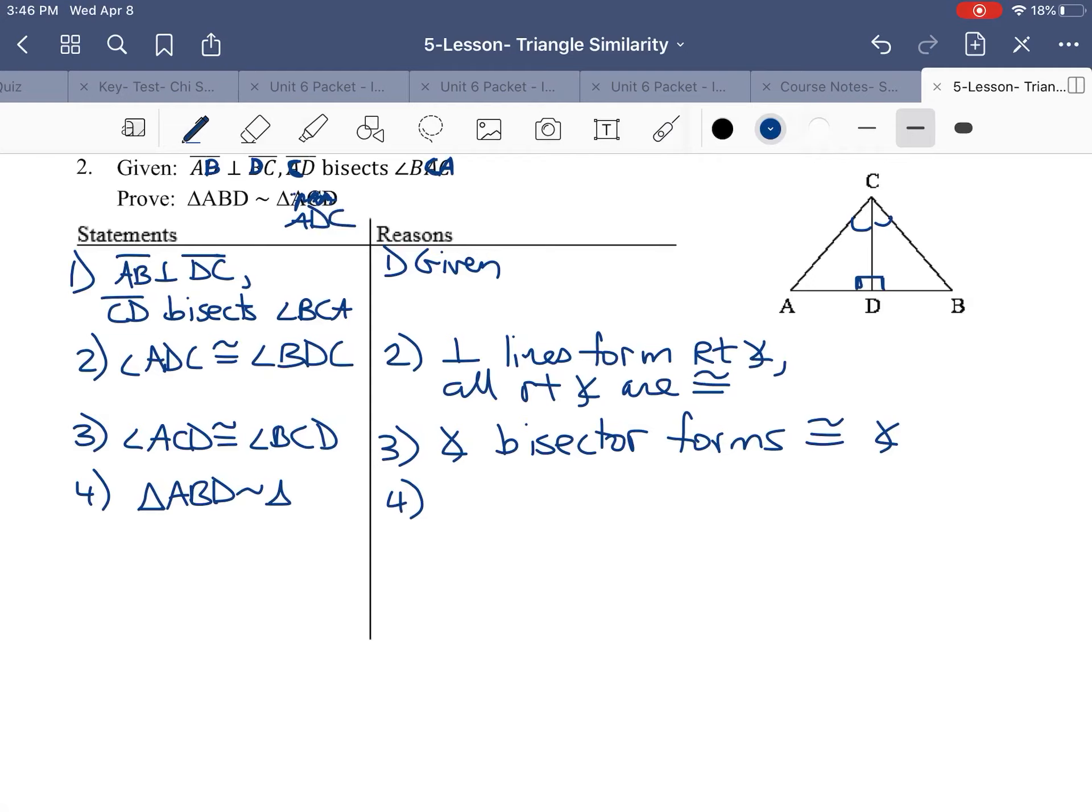And the other one should have been BDC. It's called tripping at the finish line. BDC, similar to triangle ADC, and that's the angle-angle similarity axiom.